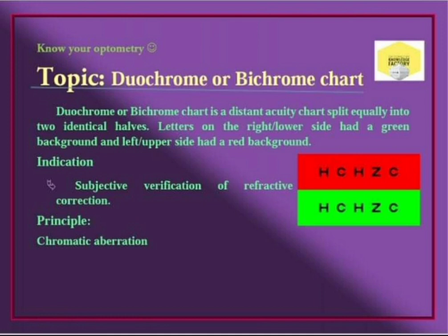On the right side, the letters in the lower portion are on a green background. On the left side, the letters in the upper portion are on a red background. This is the indication for subjective verification of refractive correction.